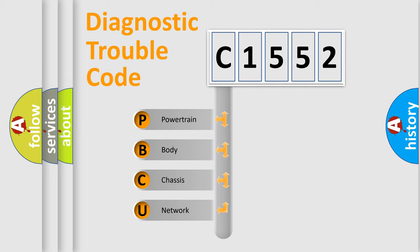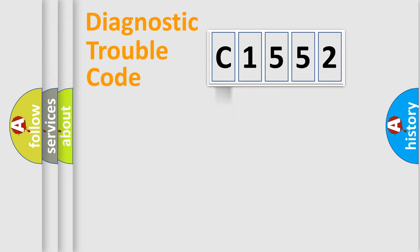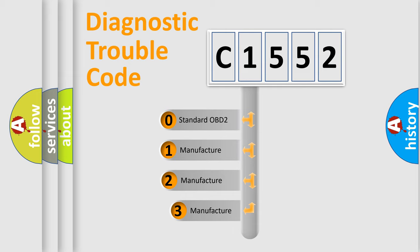We divide the electric system of the automobile into four basic units: Powertrain, body, chassis, and network. This distribution is defined in the first character code.